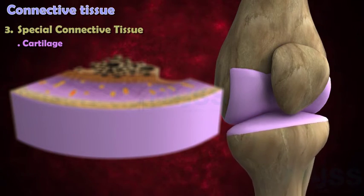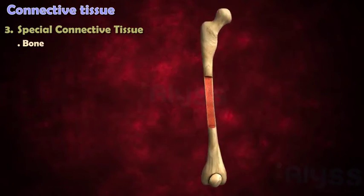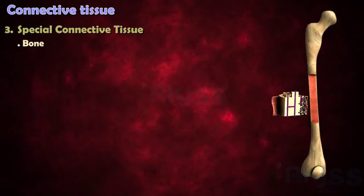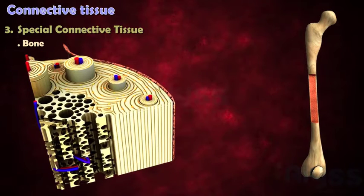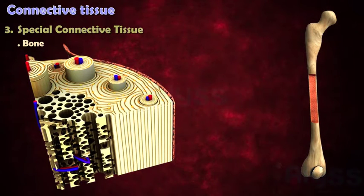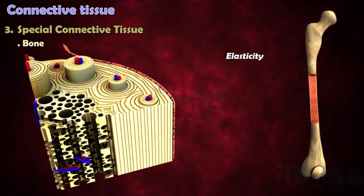Cartilage is found at the ends of bones, where it prevents friction within the joints. Bone forms when calcium salts are deposited around protein fibers. The calcium salts provide rigidity, while the fibers provide elasticity and strength.